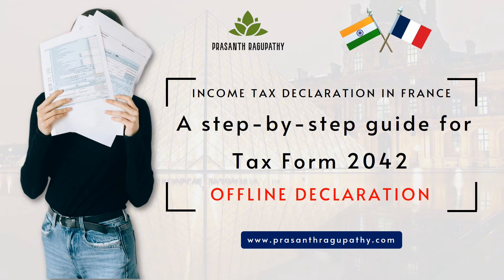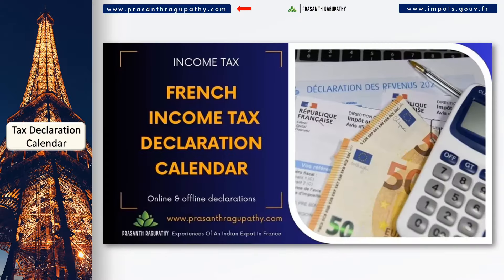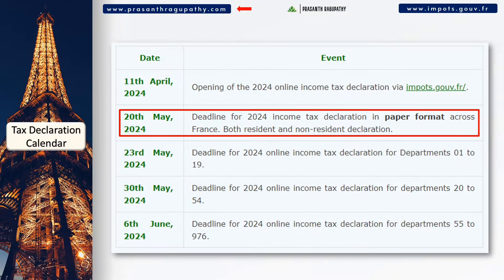The various resources to help you complete your tax declaration are available in the description below. Let me remind you of the various income tax declaration deadlines applicable depending on your postal codes. For offline paper declarations, the last date to submit is 20th May 2024 for everyone. If you can do an online declaration, the deadlines are different as per your postal codes.